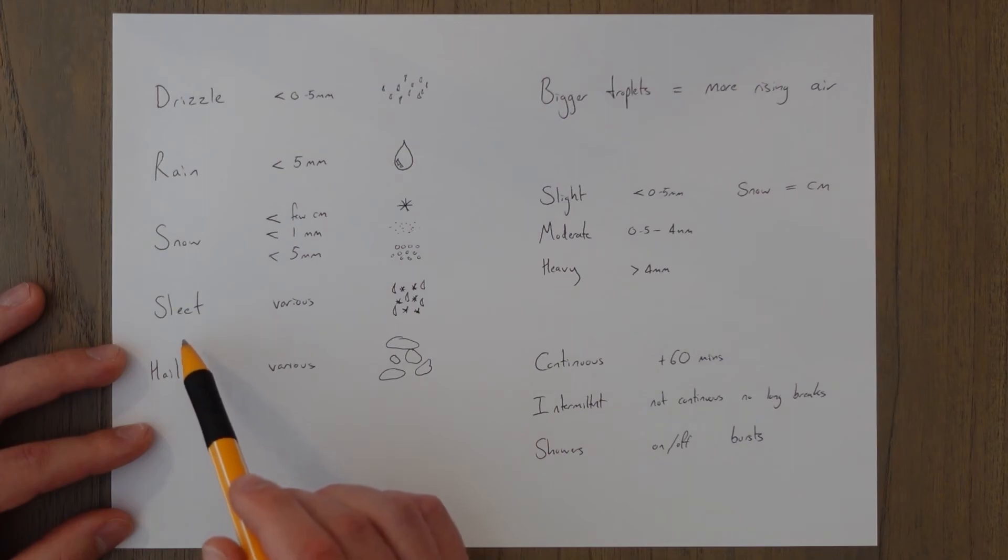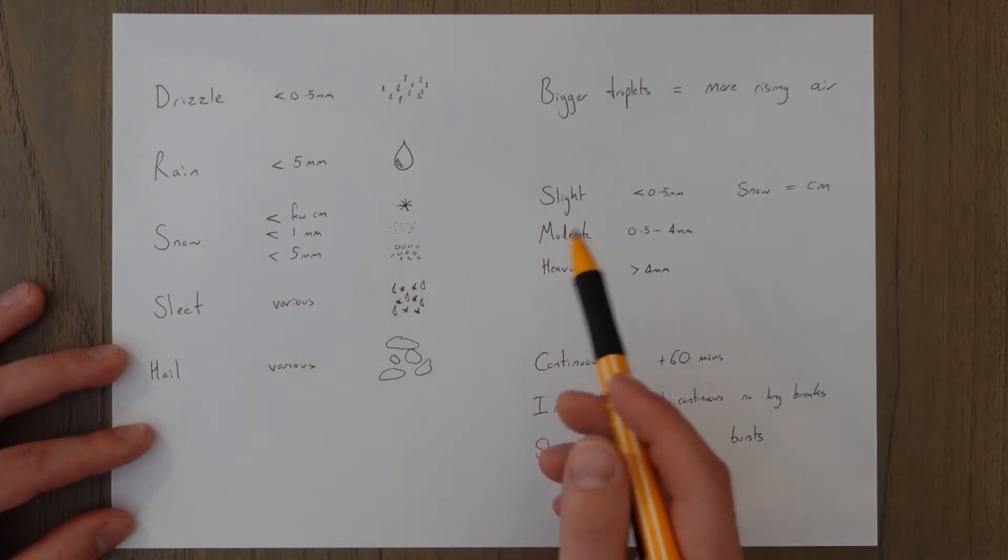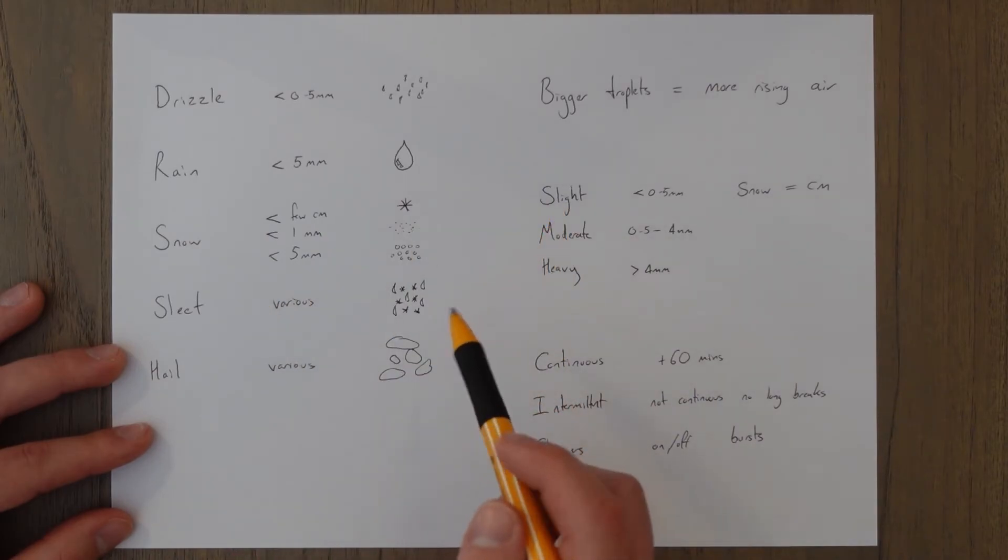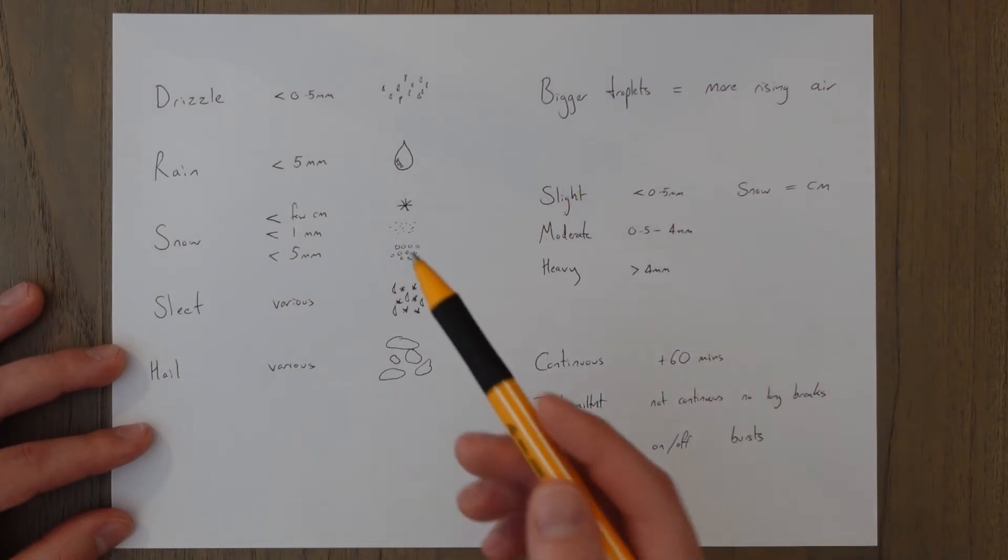You get sleet which can be various shapes and sizes. It's a combination of both water and ice-based precipitation. So it could be drizzle and ice grains for example or ice pellets.